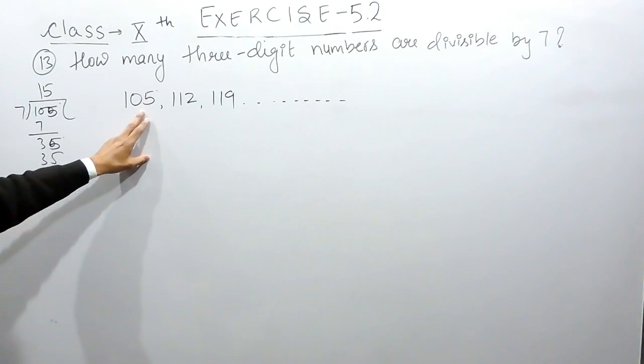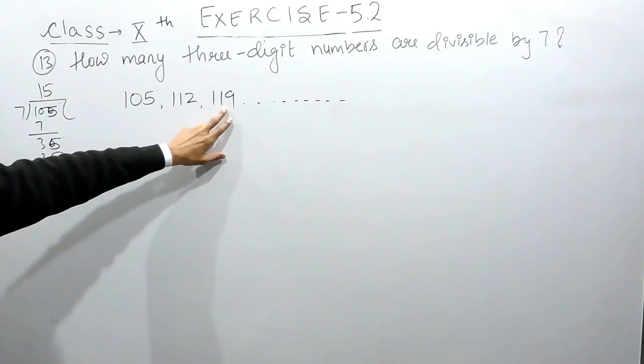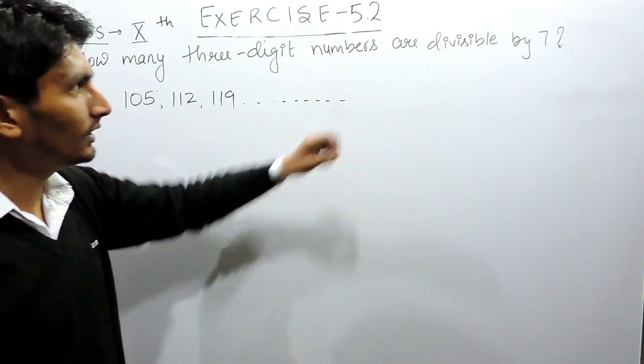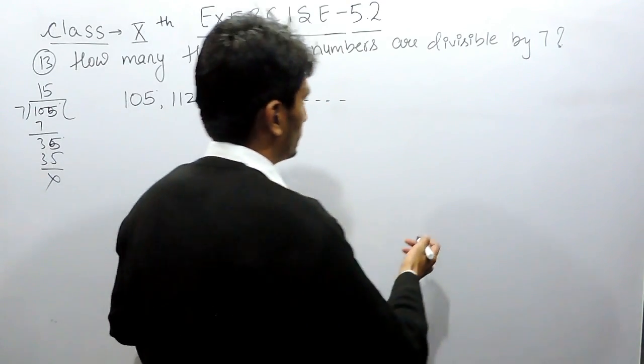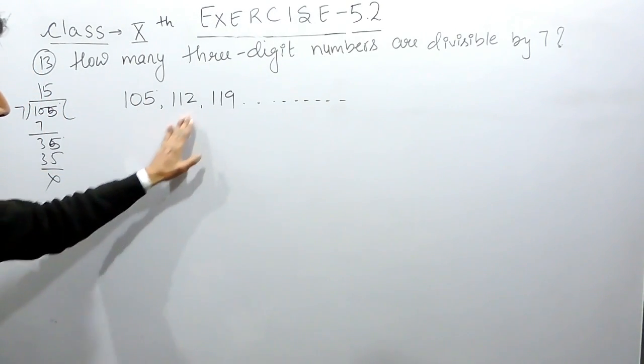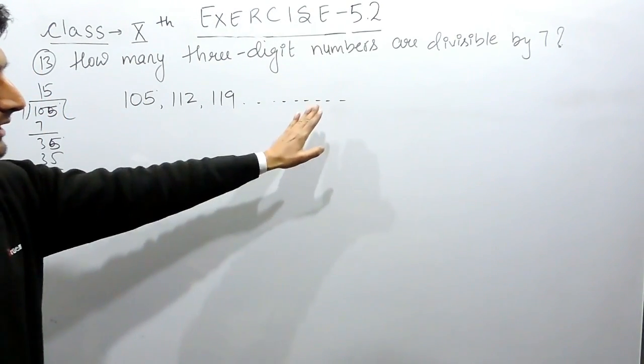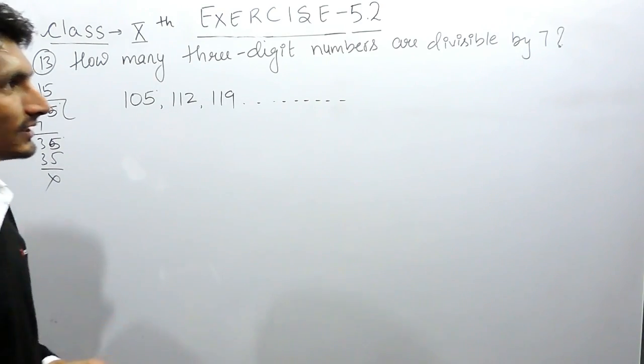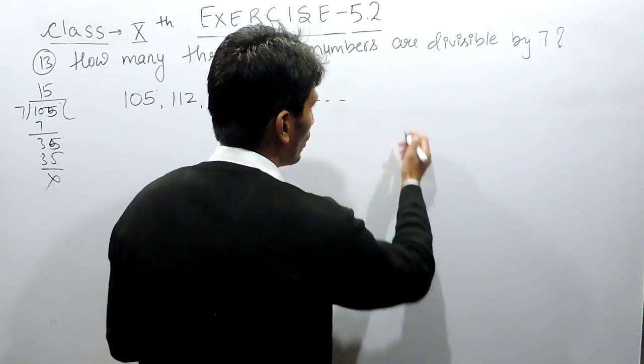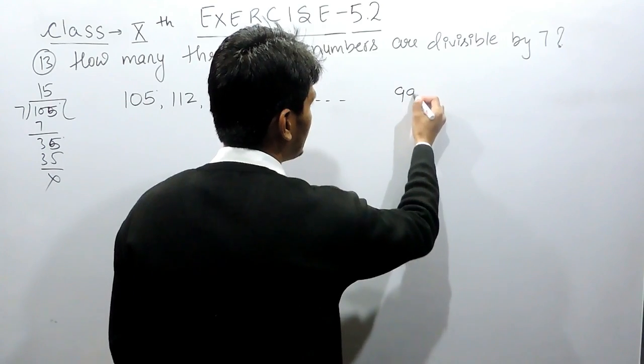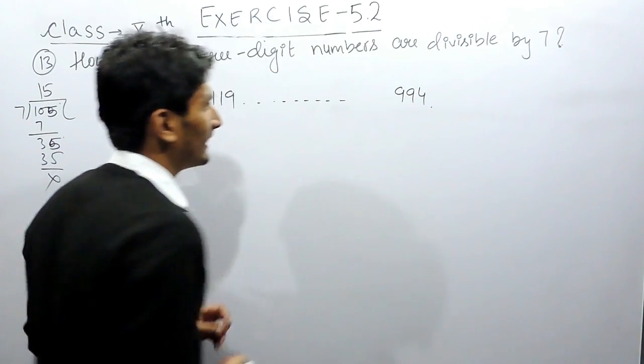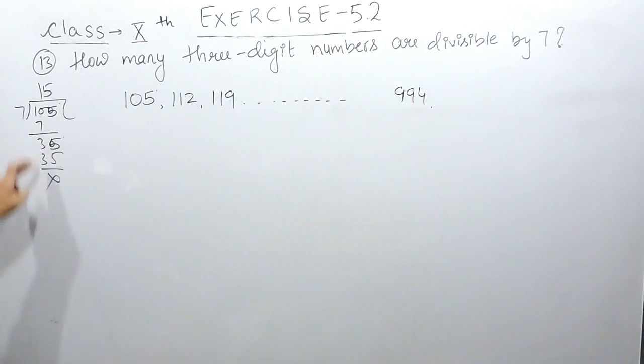This would be the first term, this would be the second term, this would be the third term, and so on. The last term—either you can count the number of terms in this series—and the last term of this series will be 994. This is again calculated using the same method.